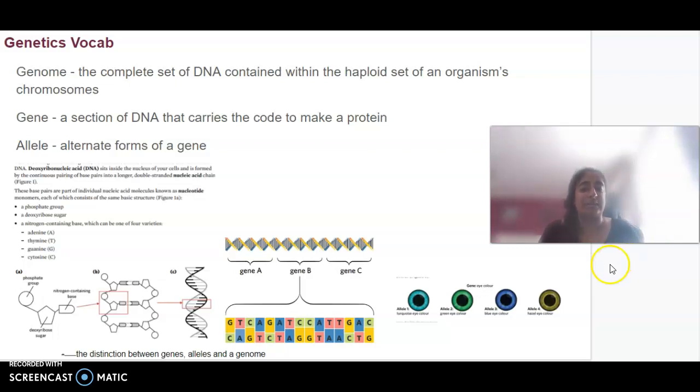DNA stands for deoxyribonucleic acid. It is basically made up of base pairs. Those ATCGs are our nitrogenous bases. A binds with T with two hydrogen bonds, and C binds with G with three hydrogen bonds, forming a double-stranded nucleic acid chain.